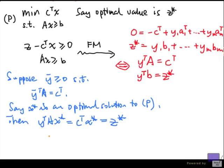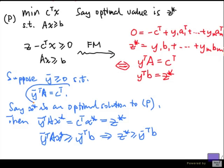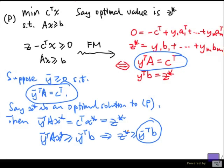But we know that y transpose a x star is at least y bar transpose b because each y bar value is non-negative. What is this saying here? Notice that I am taking y bar transpose a to satisfy the same equation as the y we got up here. But now notice that if we evaluate y bar transpose b, it is less than equal to z star. Whereas before, the y we got, the y transpose b gives exactly z star.